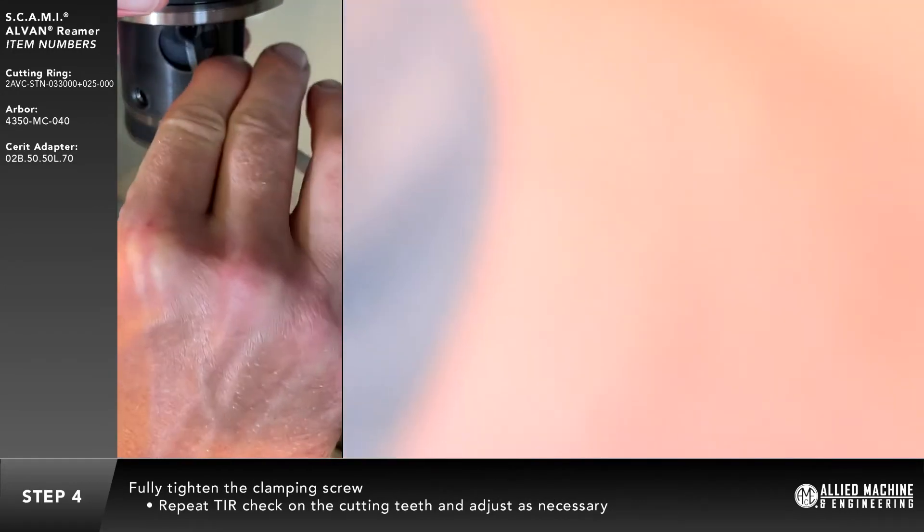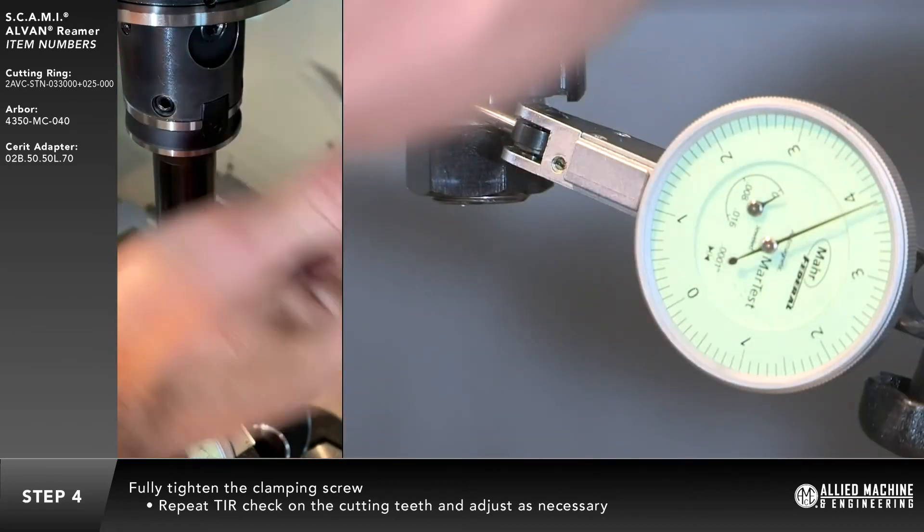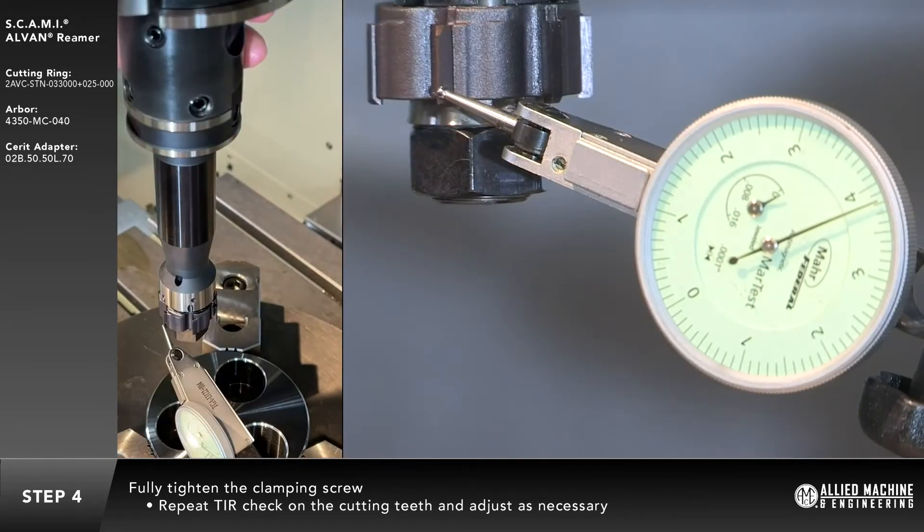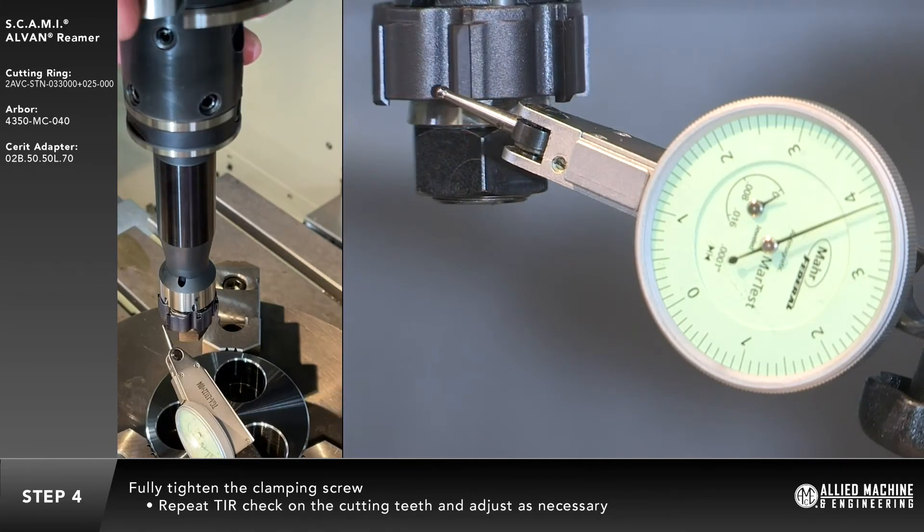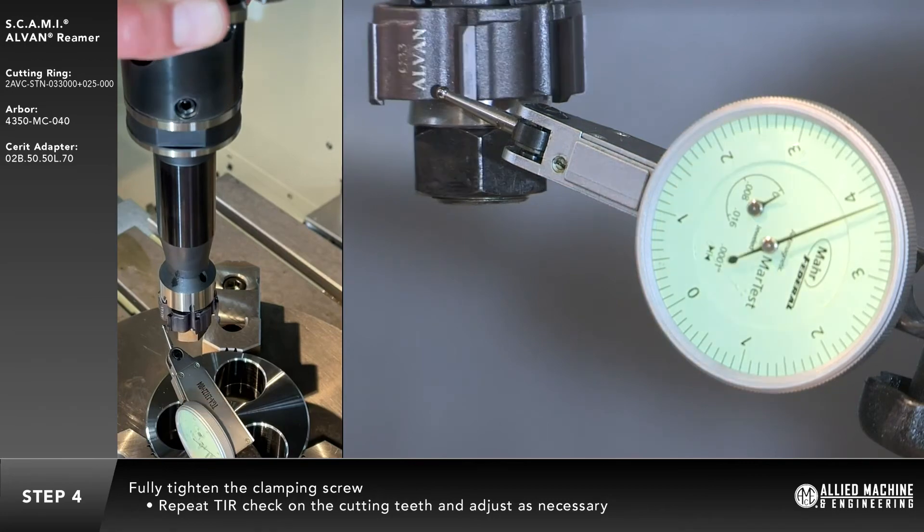Fully tighten the clamping screw. During the tightening, the tool body may shift slightly. Repeat the TIR check on the cutting teeth and adjust as necessary.